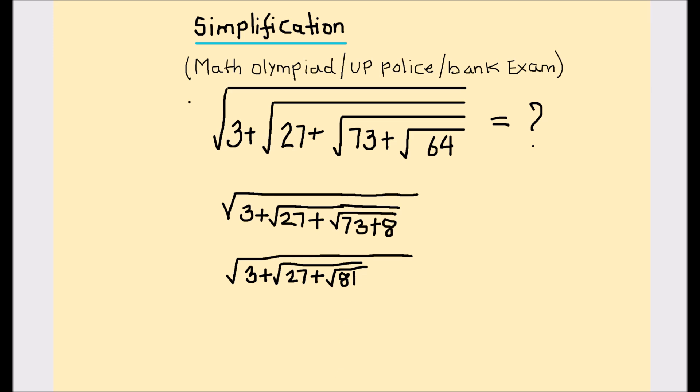We know that the square root of 81 is 9, so now this is reduced to √(3+√(27+9)).